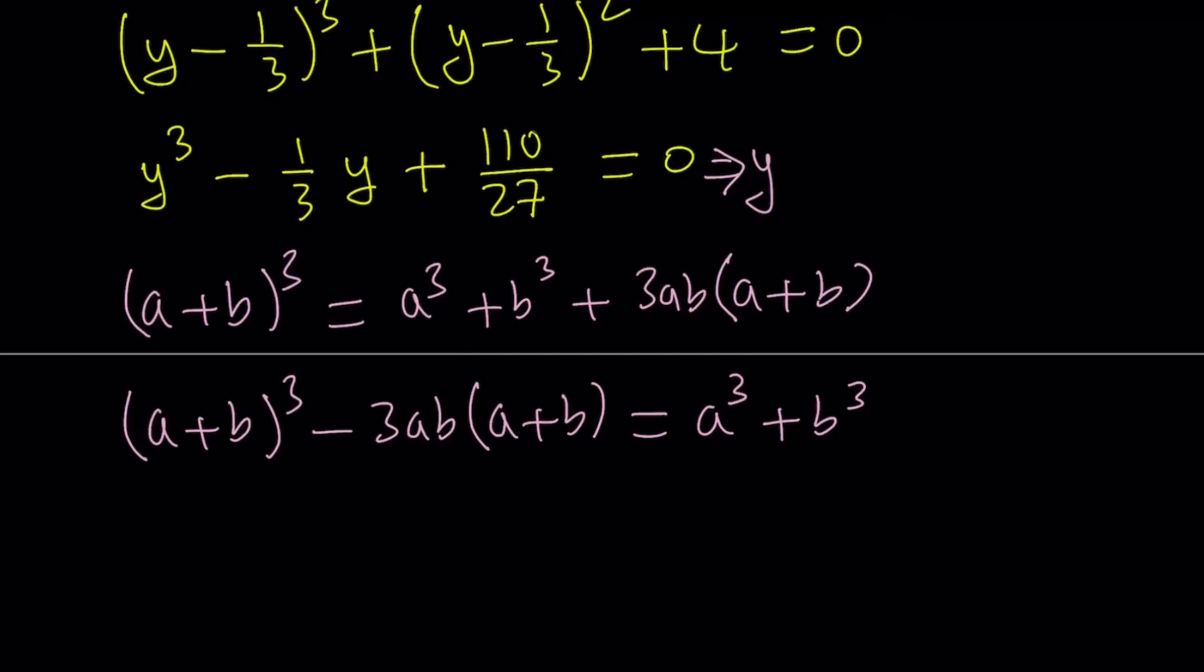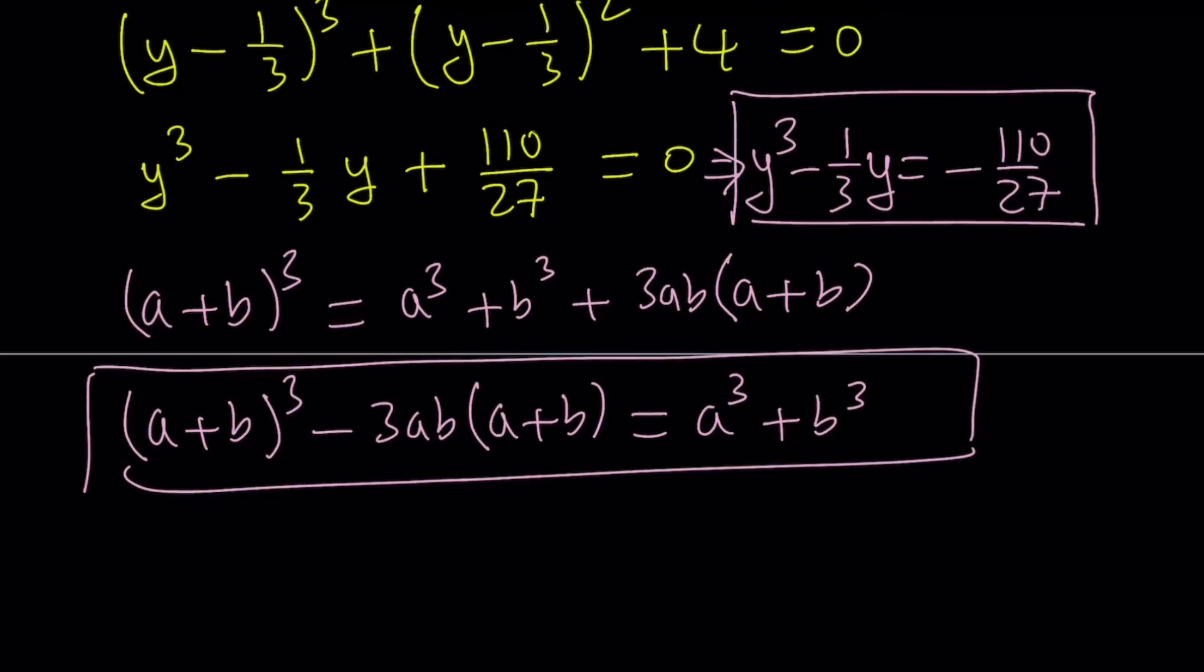I want to write my equation the same way. So I can write this as y cubed minus 1 over 3y equals negative 110 over 27. We're going to compare those two and make some replacements, and then that'll be Cardano. Fairly easy, right? Well, it kind of looks easy when someone else does it.